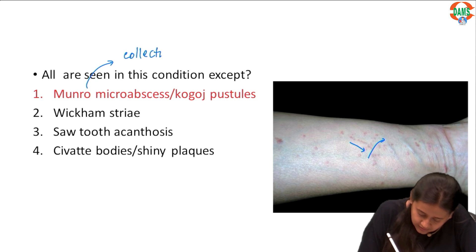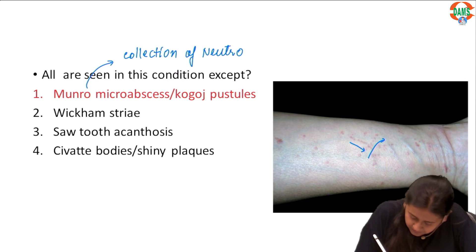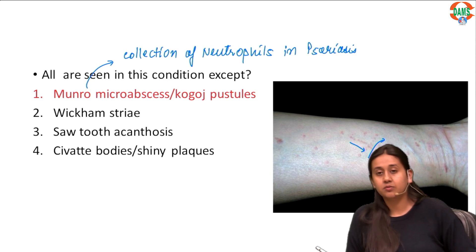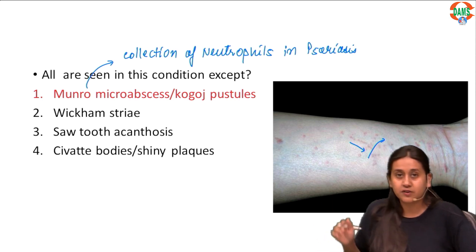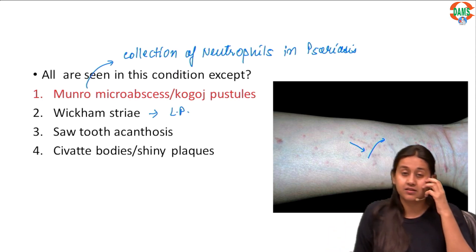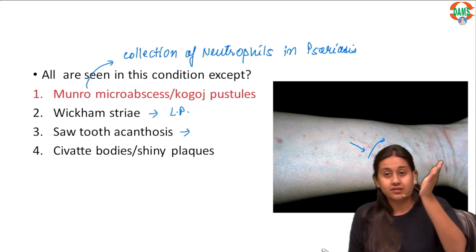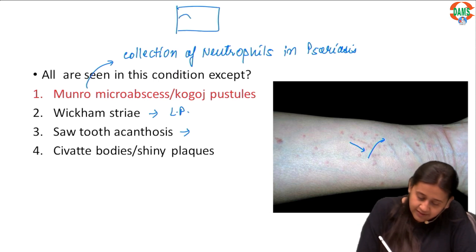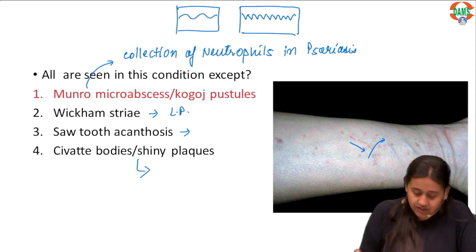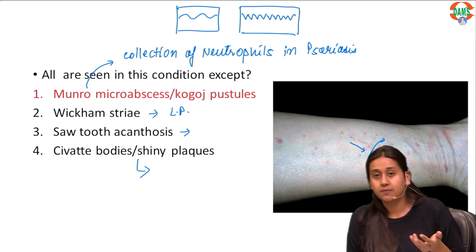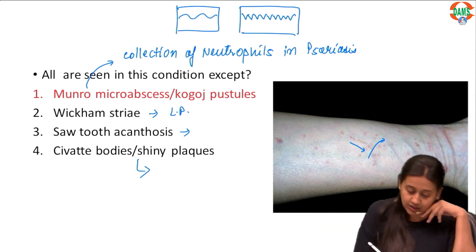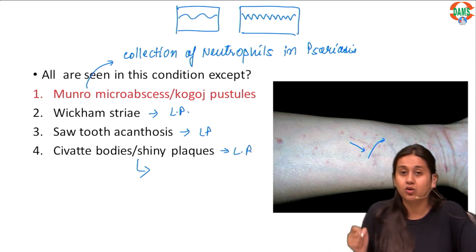Micro Munro abscess and Kogoj's pustule represent collection of neutrophils in psoriasis patients — micro Munro in the stratum corneum and Kogoj's micro pustule in the stratum spinosum, so that is a feature of psoriasis. Wickham's striae is a white lacy pattern seen in lichen planus on the skin; on the mucosa there are net-like white lines. Saw tooth acanthosis refers to rete ridges that are pointed and sharp, which is a feature of lichen planus. Civatte bodies are dying keratinocytes in lichen planus — T lymphocytes cause stratum basal cell apoptosis, and these apoptotic cells are known as civatte bodies. So options 2, 3, and 4 belong to lichen planus, but option 1 belongs to psoriasis — the answer is option 1.